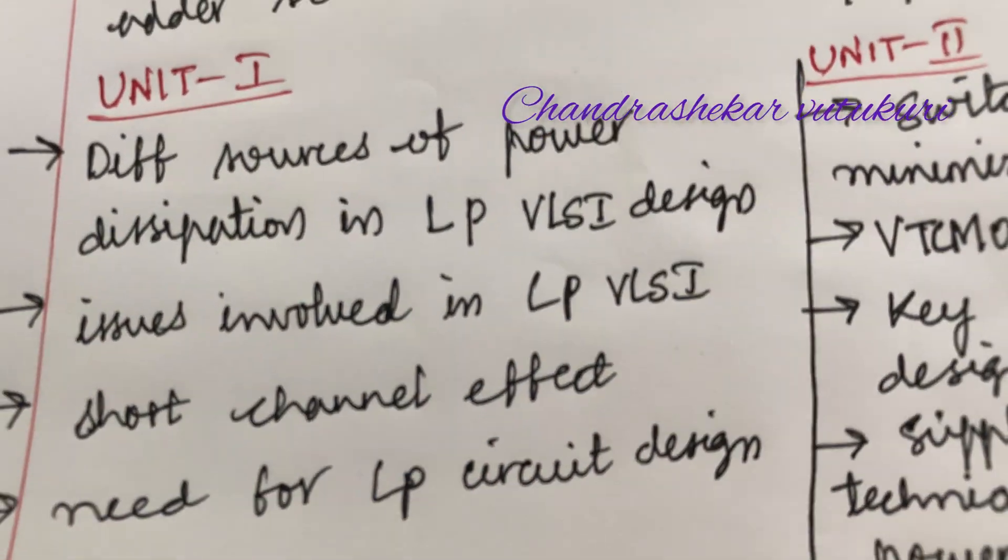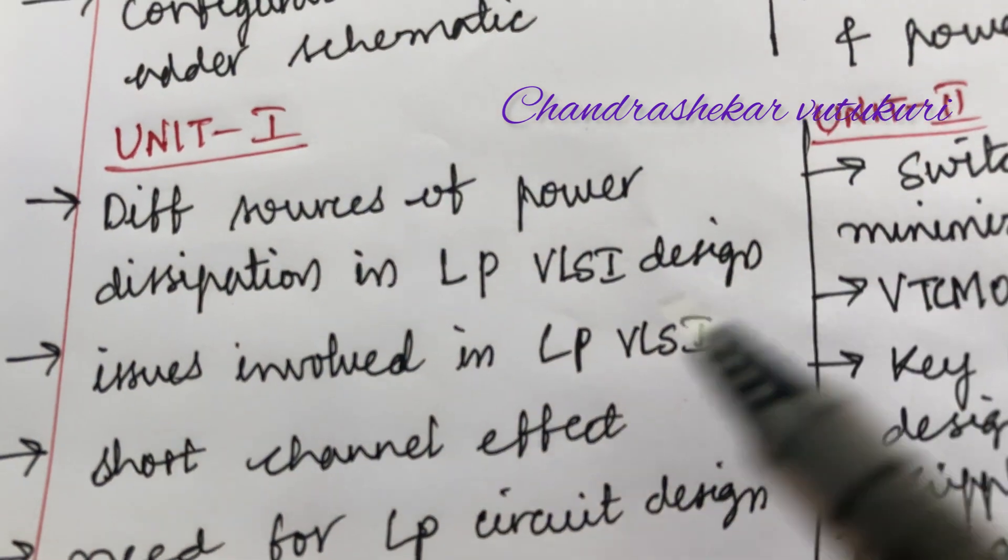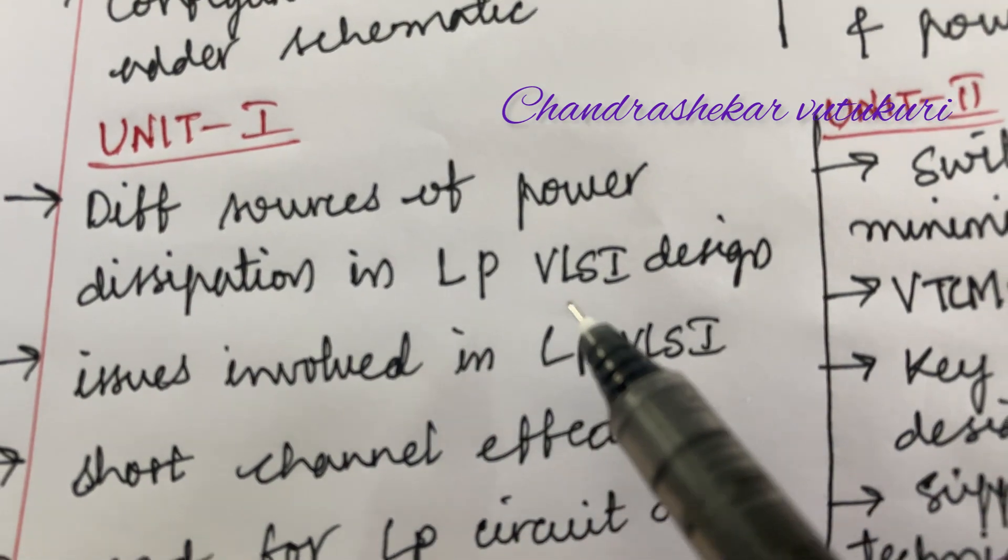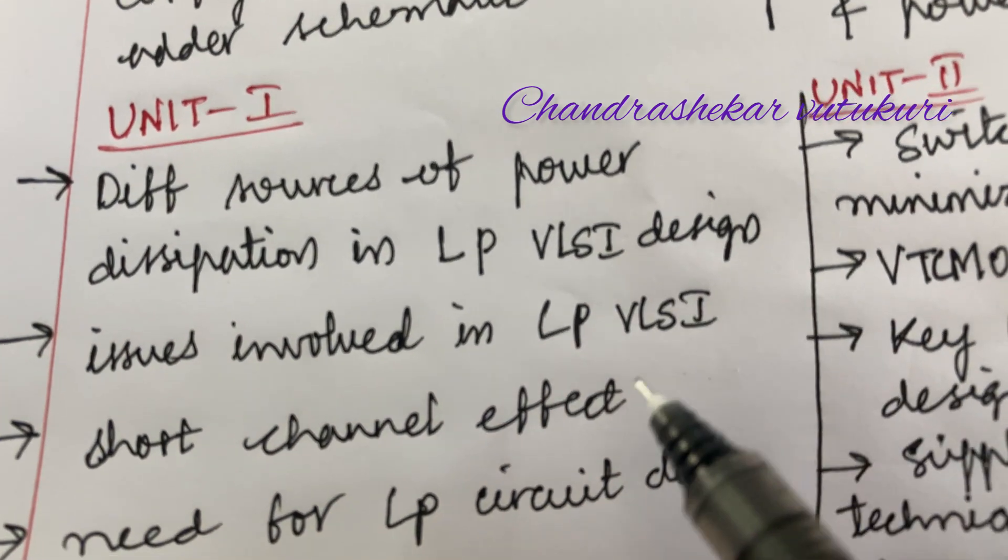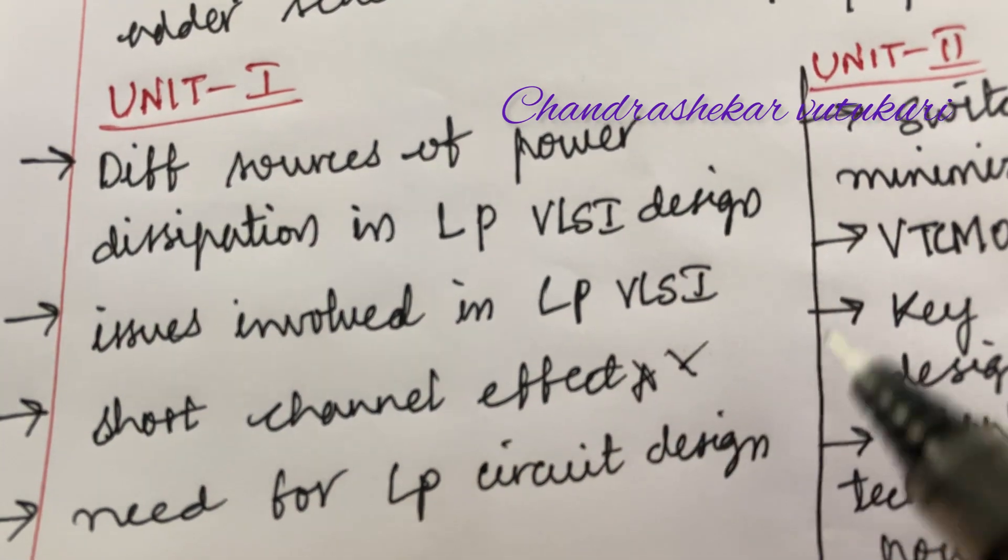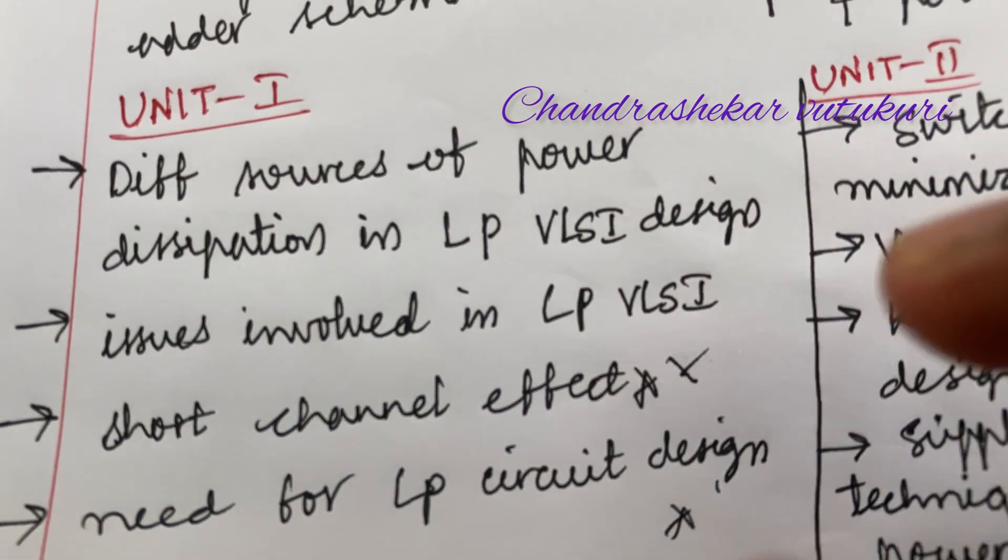Next is Unit 1: the different sources of power dissipation in low power VLSI design and the issues involved in low power VLSI design. Short channel effect may be the short question and the need for LP circuit design is also said to be one of the important questions. As the unit is too short in structure, you can go with Unit 1 first.